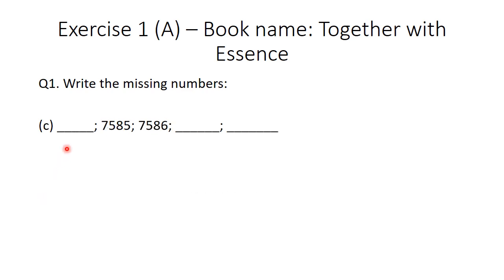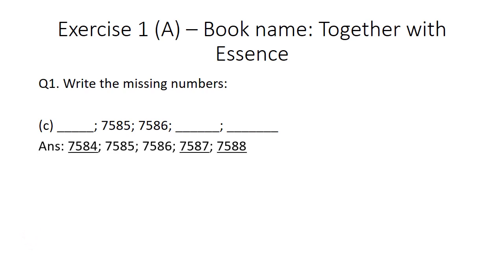Part C: the given question is _, 7585, 7585, 7586, _, _. The number that comes before 7585 is 7584, and the numbers that come after 7586 are 7587 and 7588.